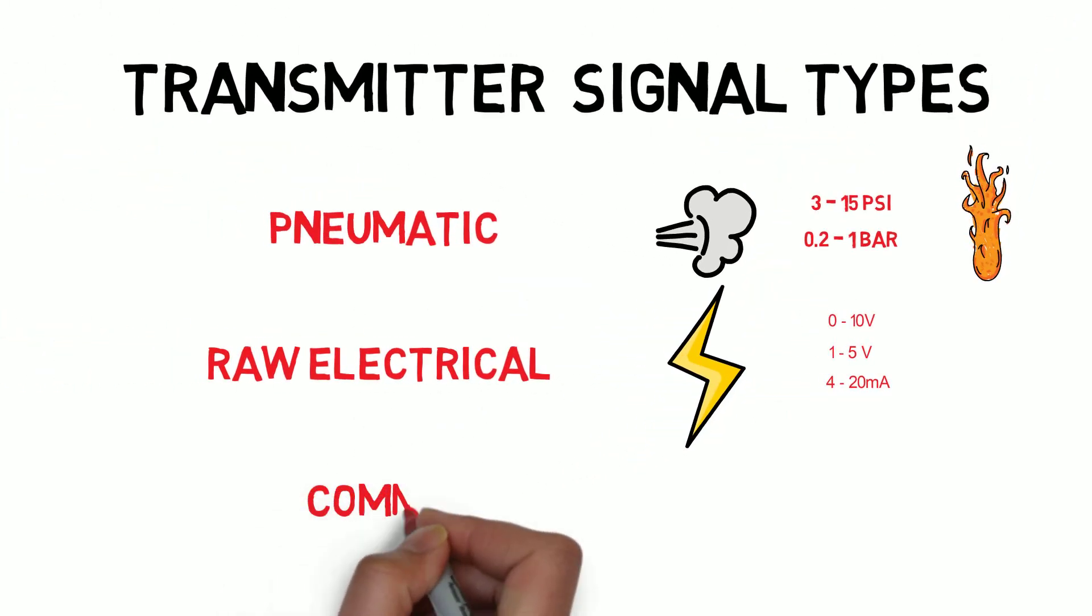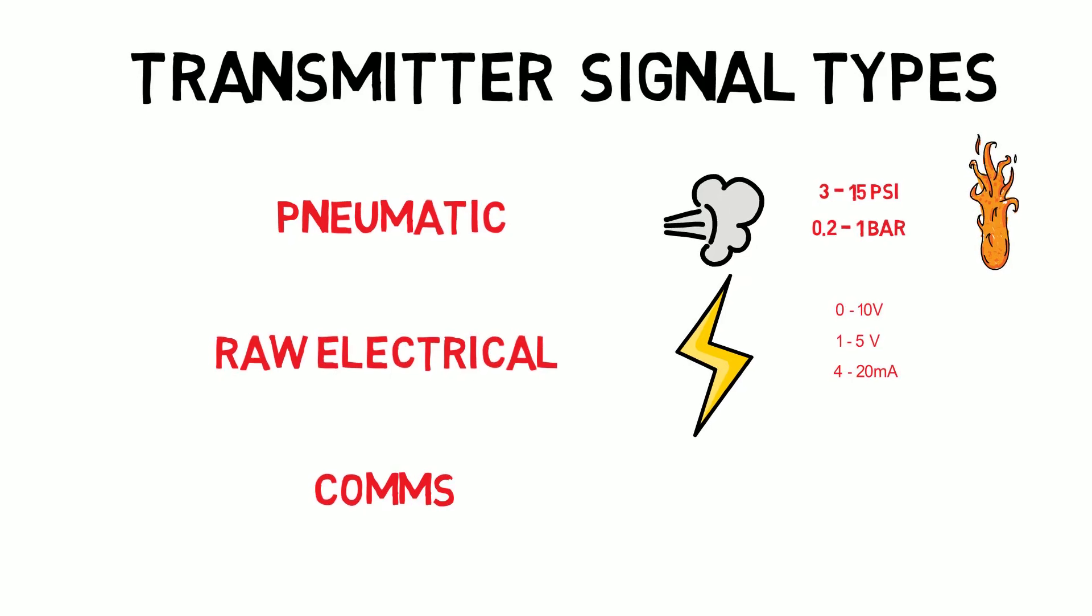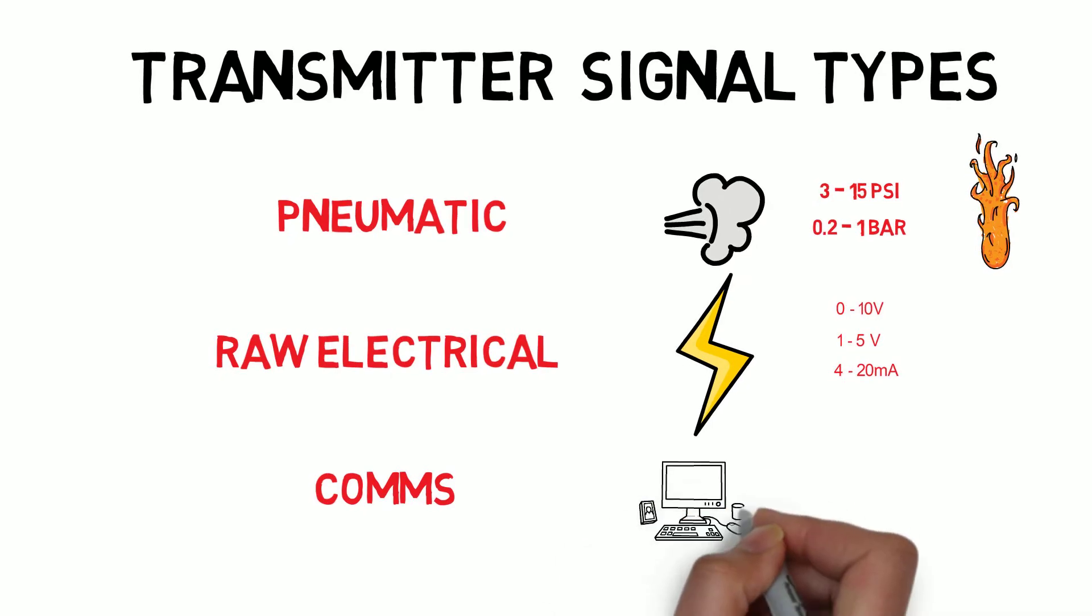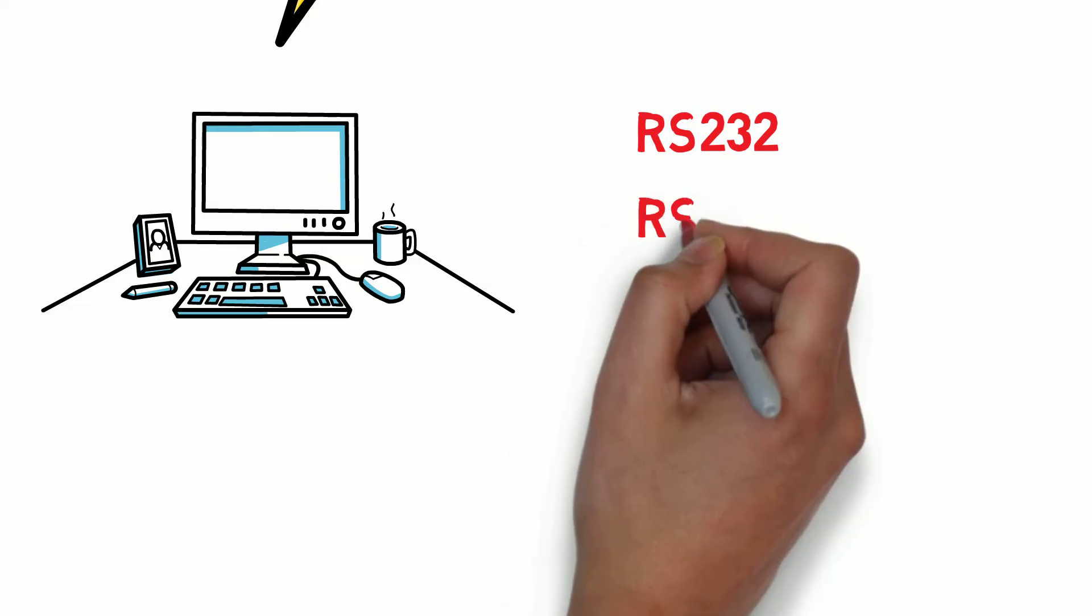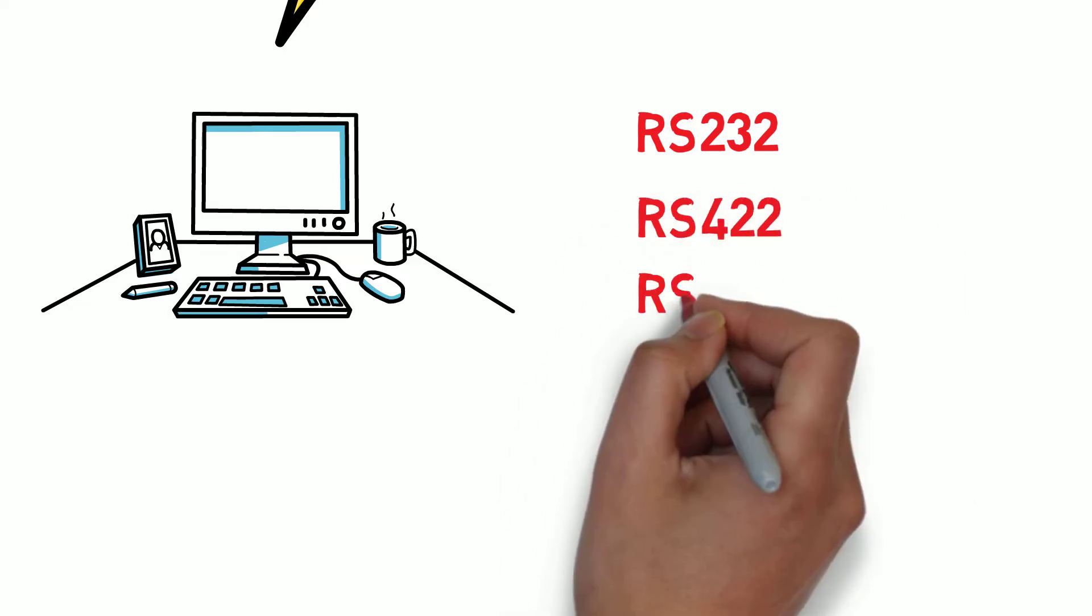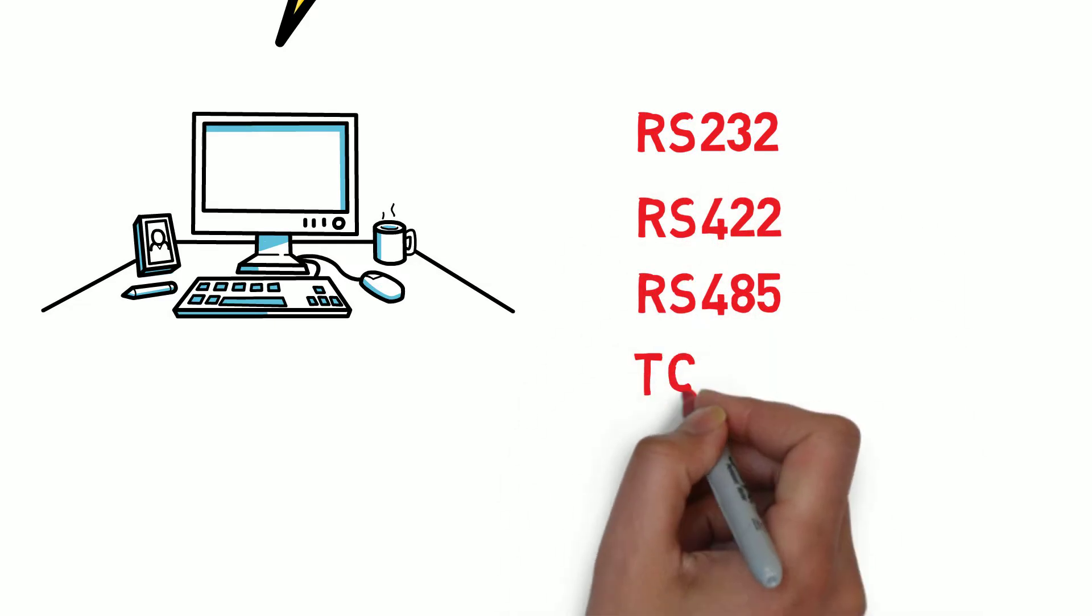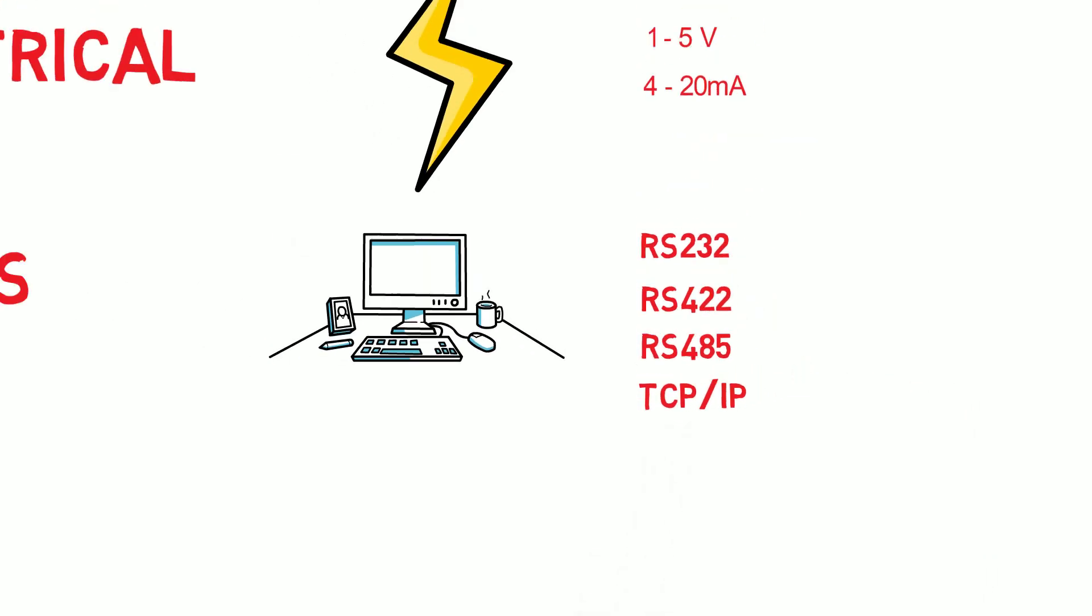As well as raw signals data can be transferred using different comm signal standards. Common signal standards you'll find in industry are RS-232, RS-422, RS-485 and more modern systems use TCP IP.